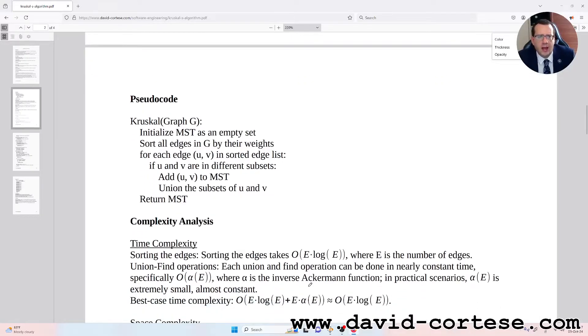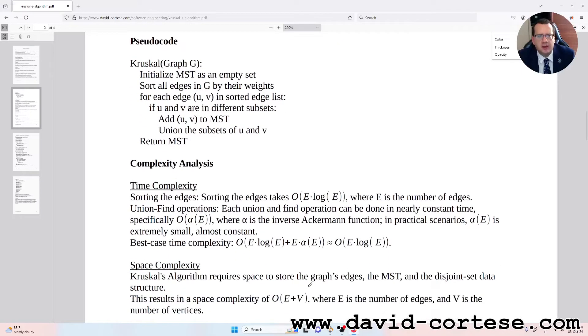For each edge U-V in sorted edge list. If U and V are in different subsets, add U-V to MST. Union the subsets of U and V. Return MST.